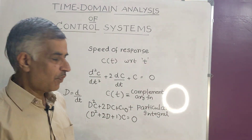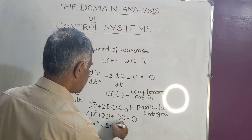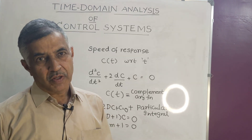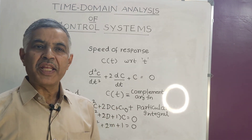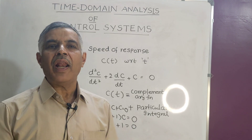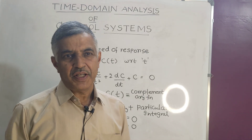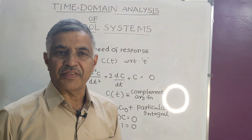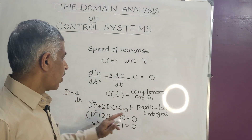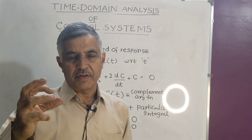Then you write the auxiliary equation: m² + 2m + 1 = 0, and find the roots. There are three possibilities: roots may be real and unequal, roots may be real and equal, or roots may be complex and conjugate. Based on these three cases you write the complementary function.